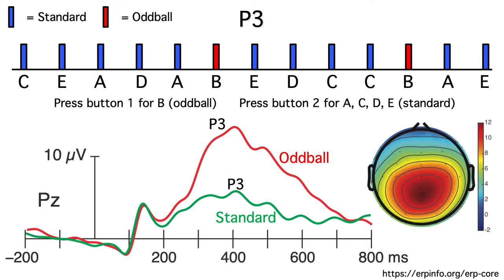As you can see, the oddball generated a larger P3 than the standards, because the probability of the standard category was 80%, even though each individual standard letter had a probability of 20%.